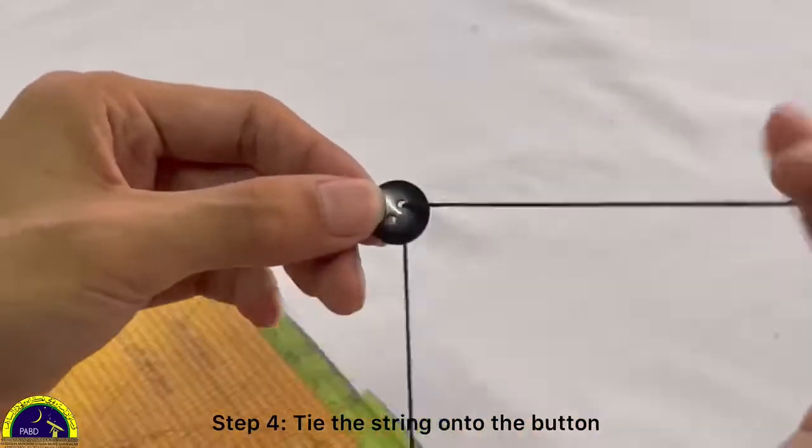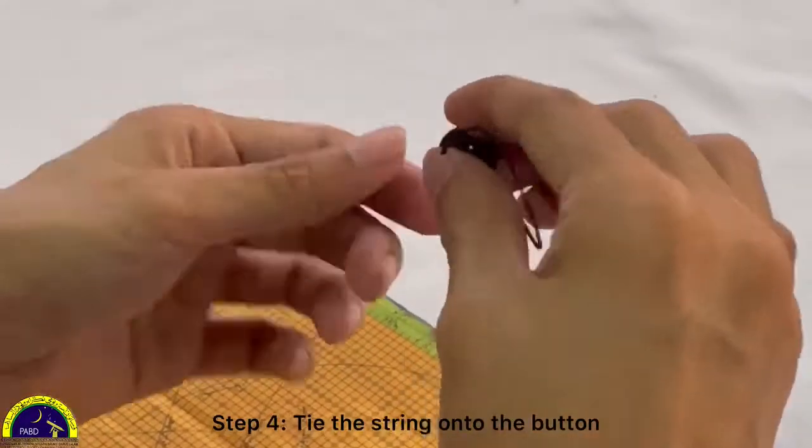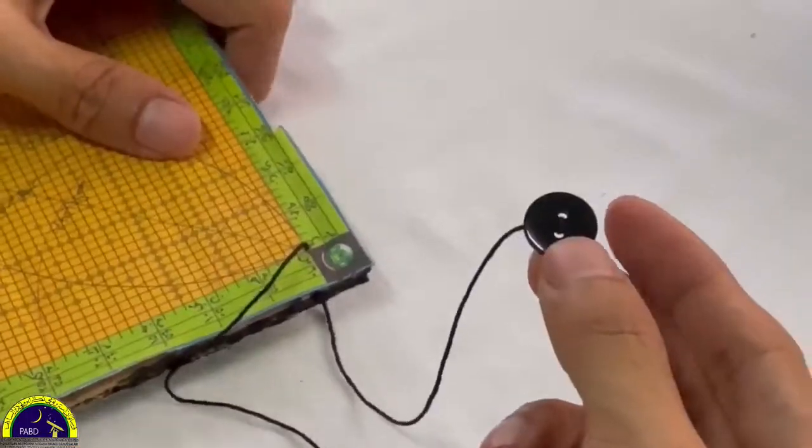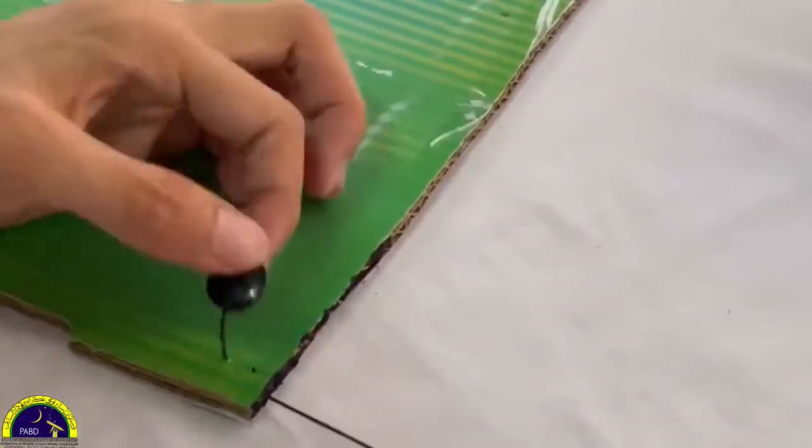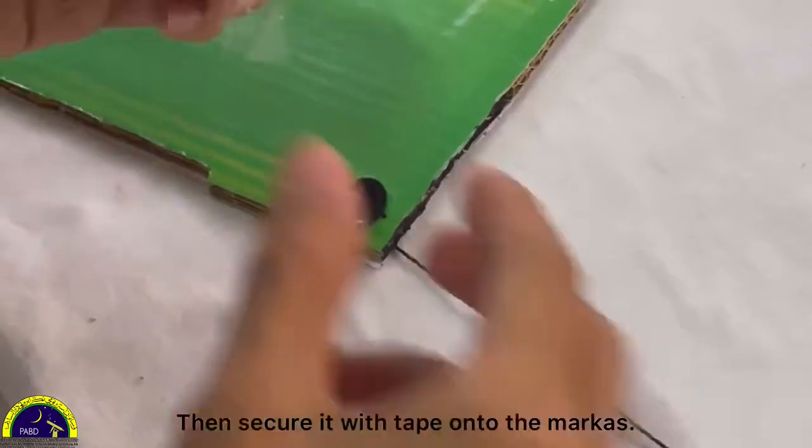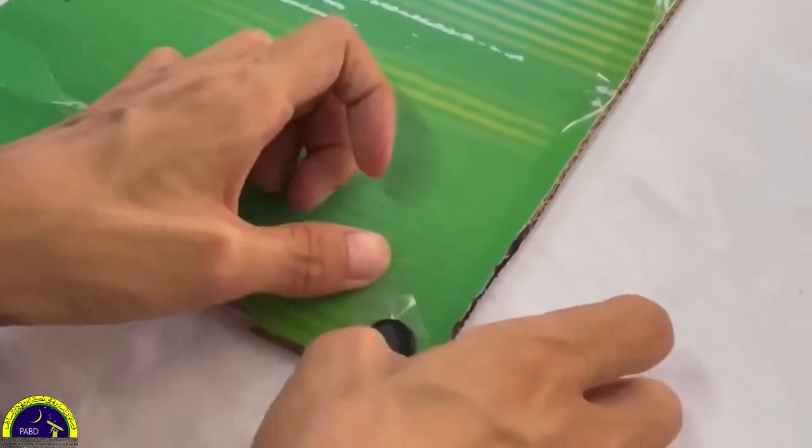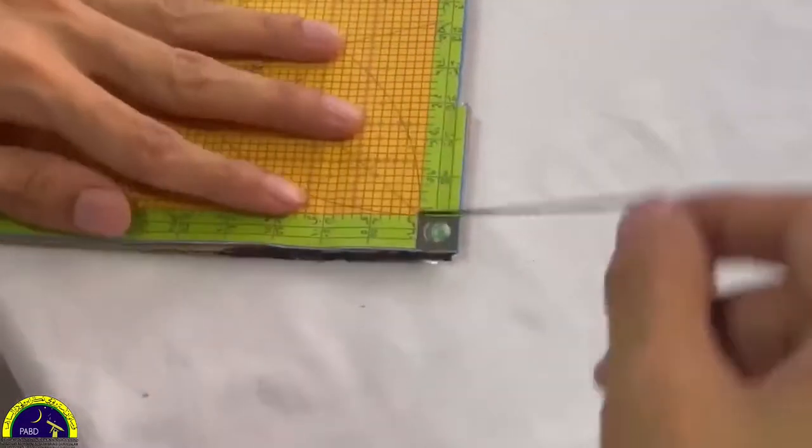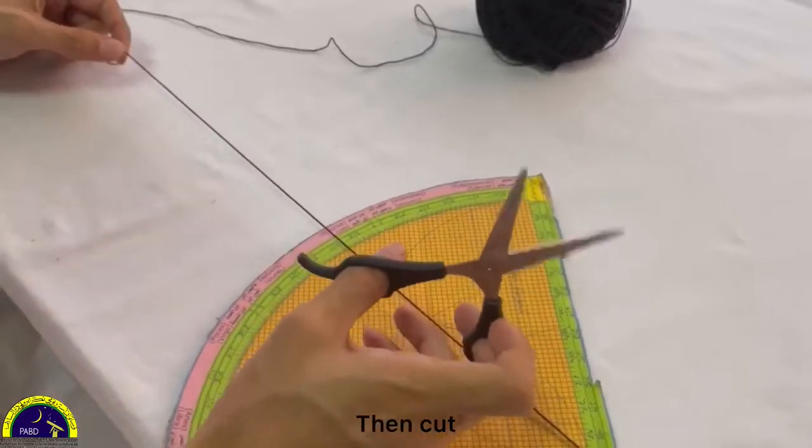Step 4: Tie the string onto the button. Then secure it with tape onto the markaz. Then cut.